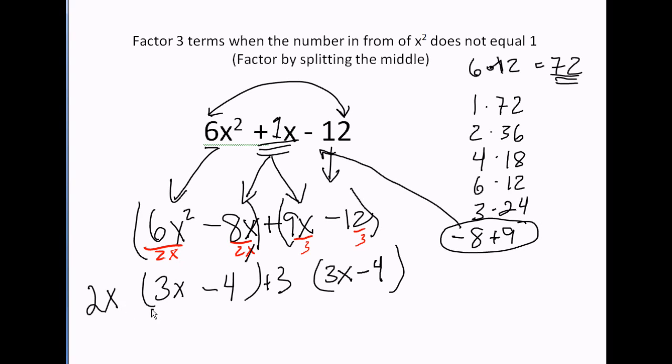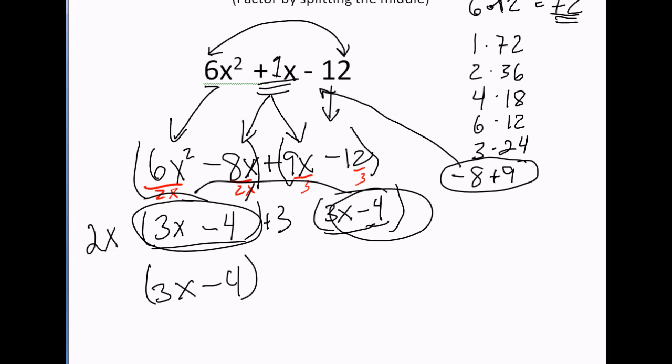At this point, your parentheses should be identical. If they don't look the same, then something went wrong in the problem. Factor out each of the parentheses. And I'm just taking them all out, and I get 3x minus 4 when I factor out the parentheses. What's left over goes into the next parentheses when you're multiplying. A 2x and a plus 3.